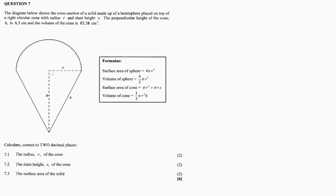The diagram below shows the cross section of a solid made up of a hemisphere placed on top of a right circular cone with radius r and slant height s. There's a difference between the perpendicular height and the slant height — the slant height is measured at an angle, while the perpendicular height is measured perpendicularly to the horizontal.